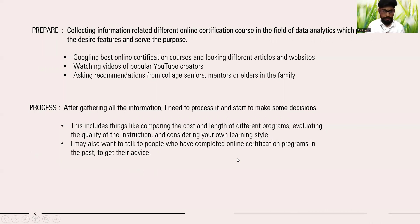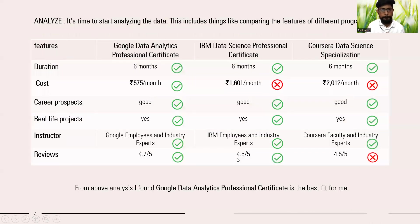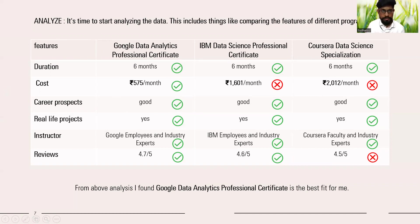After gathering information and doing process work, we will use the top gathered information to analyze, using a table, the top three courses we found: Google Data Analytics Professional Certificate, IBM Data Science Professional Certificate, and Coursera Data Science Specialization. We will evaluate them across key features.